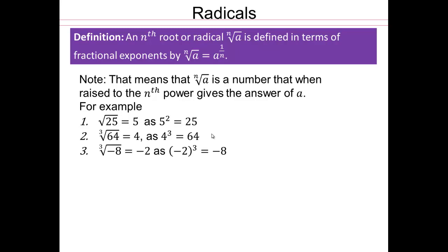4 cubed is 64, and so on. Negative 8. We know that negative 2 times negative 2 times negative 2 is negative 8. So you end up with negative 2. So cube root of negative 8 is negative 2. So that's how you read it. Square root of 25, cube root of 64, cube root of negative 8. Make sure you know how to read it.